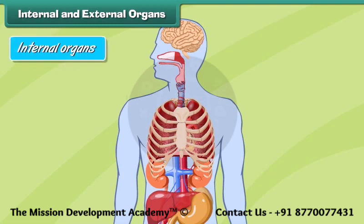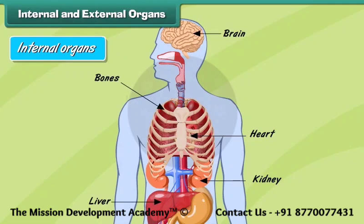The organs that are located inside the human body and not visible to the human eye from outside are called internal organs. For example, heart, liver, kidneys, brain, bones, etc. Let us understand how some internal organs function.